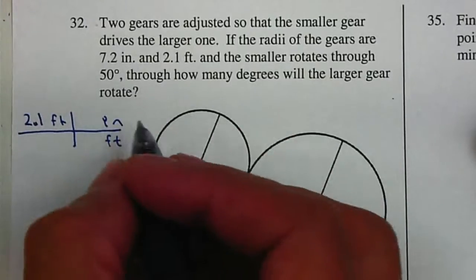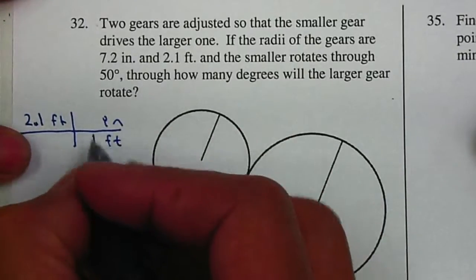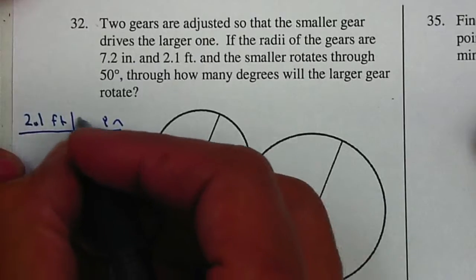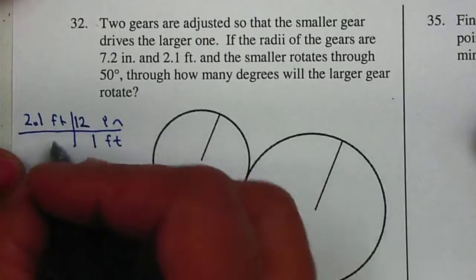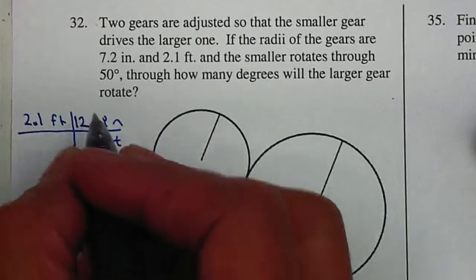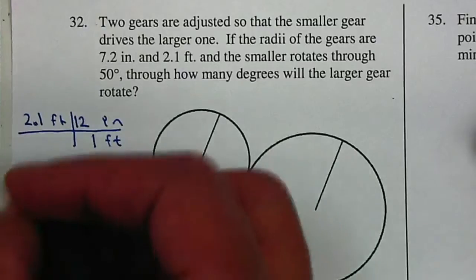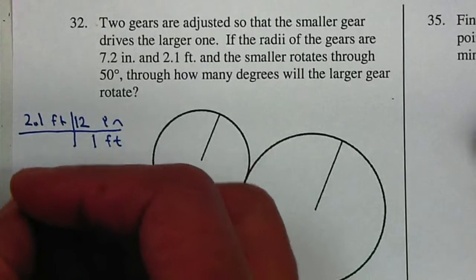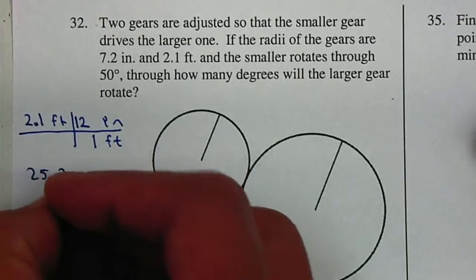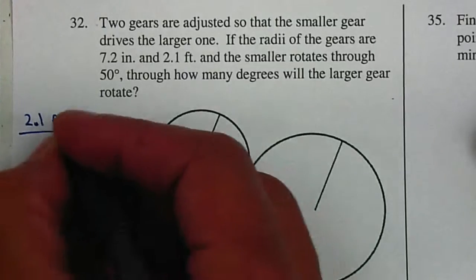I need to find an equivalency. I know that one foot is equal to how many inches? 12. So multiply 2.1 by 12, and that gives you 25.2. So that will be 25.2 inches, because your feet cancel out.